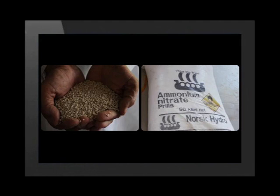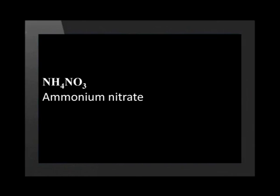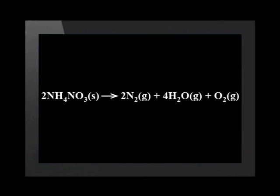Here is a sample of garden fertilizer. A key ingredient of fertilizer is ammonium nitrate. Ammonium nitrate is also a major ingredient in explosives such as dynamite. Ammonium nitrate has the formula NH4NO3. It is easily accessible as it is used in so many fertilizers that terrorists can easily obtain it to make explosives. Ammonium nitrate decomposes when heated to form nitrogen gas, water vapor, and oxygen gas.